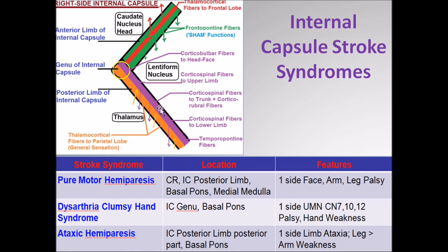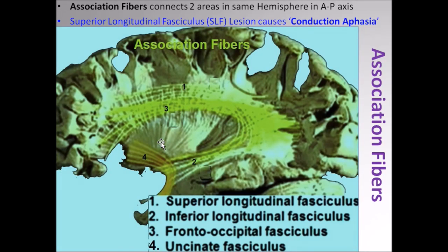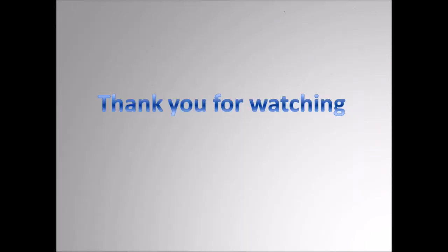This more or less concludes our discussion of the projection fibers, the corona radiata, the internal capsule, and the clinical correlations of the posterior limb. Remember that there are many other fibers present in the brain. The largest commissural fiber is the corpus callosum, which connects the neocortex of both hemispheres, and there are association fibers which run in an anterior-posterior axis and connect different regions of the brain in each hemisphere. Thank you for watching and if you have any questions or comments, please put them in the section below. Have a nice day.